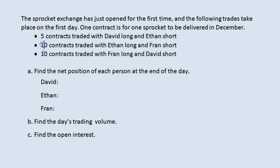So we have three different trades being made here. First, five contracts traded with David Long and Ethan Short. As a reminder, David Long means that David is obligated to buy five sprockets in December, and Ethan is obligated to sell five sprockets in December. We also have ten contracts traded with Ethan Long and Fran Short, and then ten contracts traded with Fran Long and David Short.